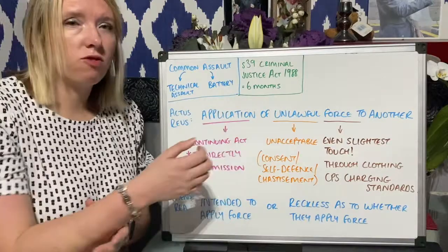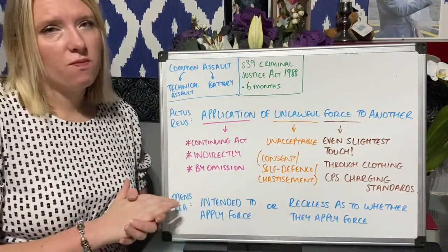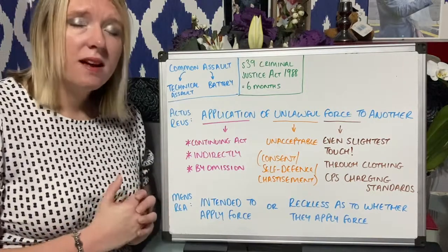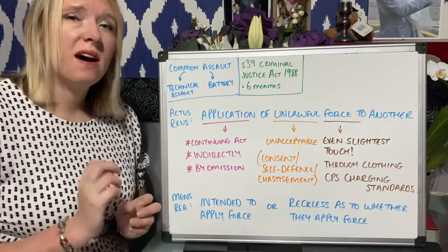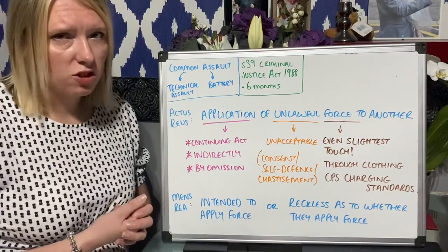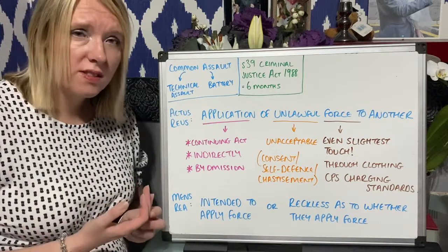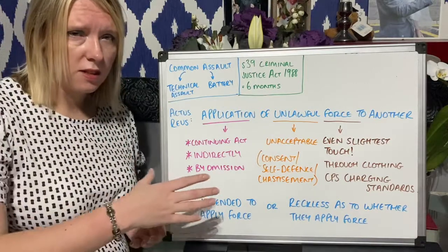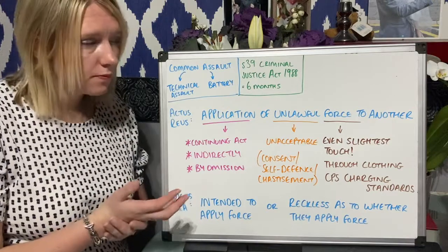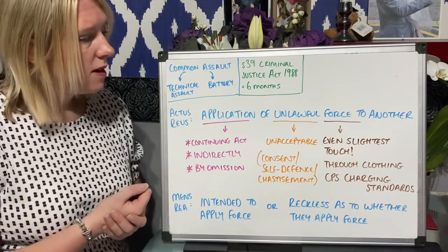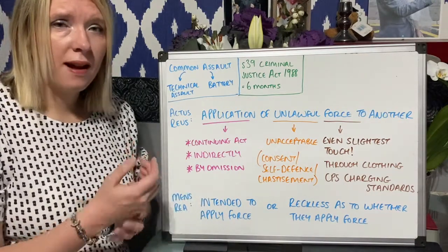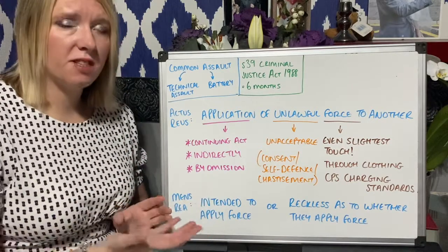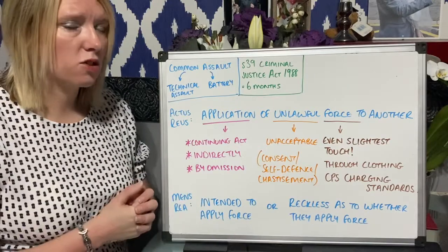Finally, it doesn't just have to be an act like grabbing, poking, or punching. It could be by omission — a failure to act when you should have. DPP v Santa Bermudez is a good example: the defendant's pockets were being searched by a police officer who asked if they had any dangerous objects on their person. They should have replied yes but replied no. When the police officer put a hand in the defendant's pocket, it was pricked by a syringe. The court said this was applying force by omission — by having the syringe and failing to disclose it, he created a dangerous situation and should have warned her.